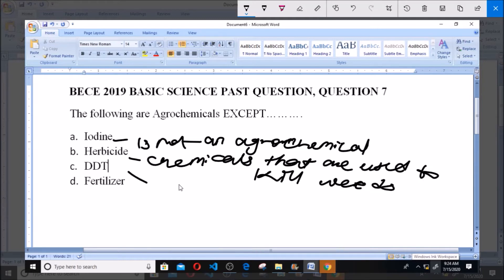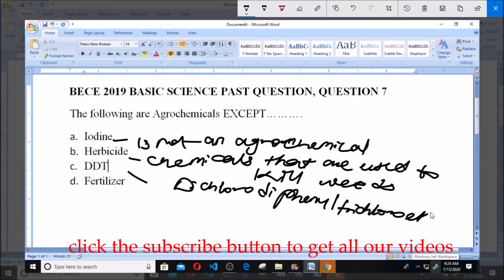Then DDT. The full meaning of DDT is dichloro diphenyl trichloroethane, and this DDT is an agrochemical.